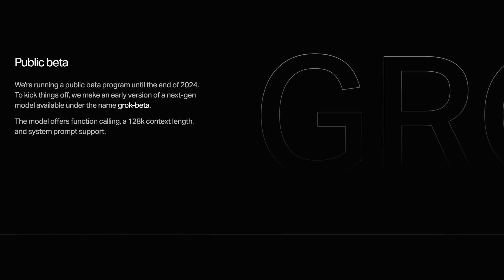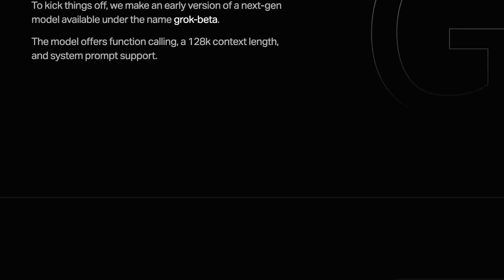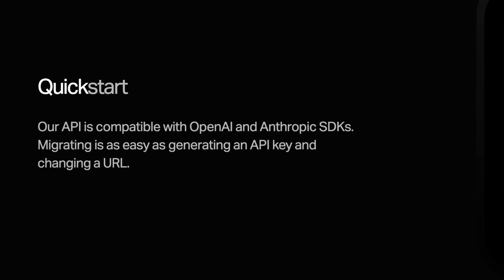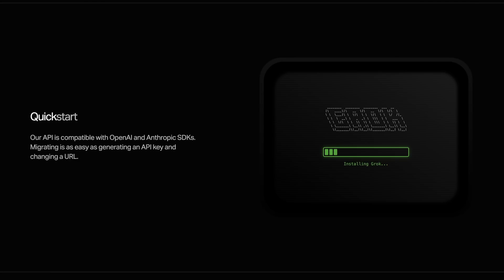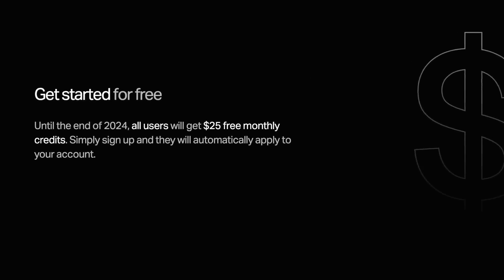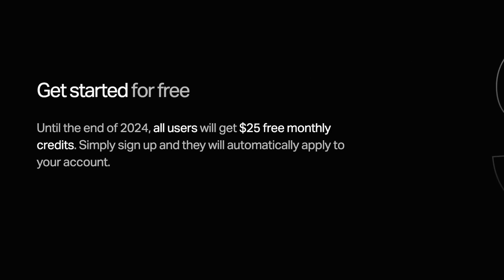You can use the latest Grok model from it, and it supports both the Anthropic API structure and the OpenAI API structure. The best part is that it gives you free credits — $25 of free API credits per month to test the API and get started using Grok.